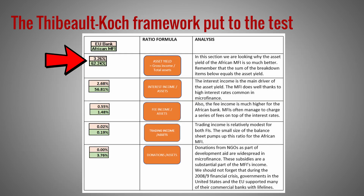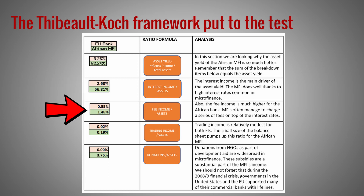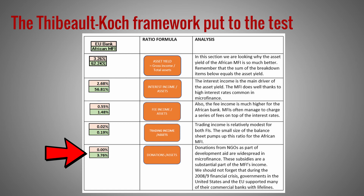In this section we look at why the asset yield of the African MFI is so much better. The sum of the breakdown items equals the asset yield. The interest income is the main driver, and the MFI does well thanks to high interest rates common in microfinance. The fee income is also much higher for the African bank, as MFIs often charge a series of fees on top of interest rates. Trading income is relatively modest for both institutions, though the small balance sheet size pumps up this ratio for the African MFI. Donations from NGOs as part of development aid are widespread in microfinance and are a substantial part of the MFI's income. We should not forget that during the 2008–2009 financial crisis, governments in the United States and the EU also supported many commercial banks with lifelines.